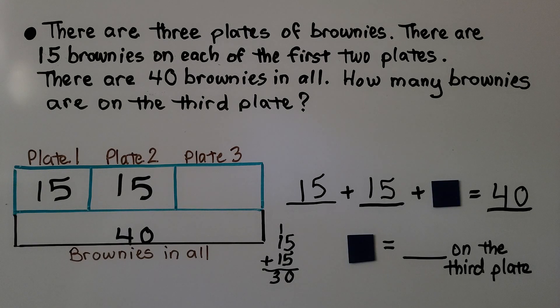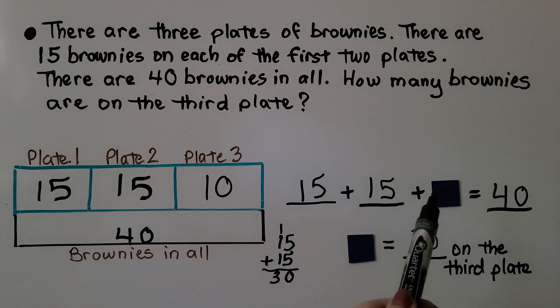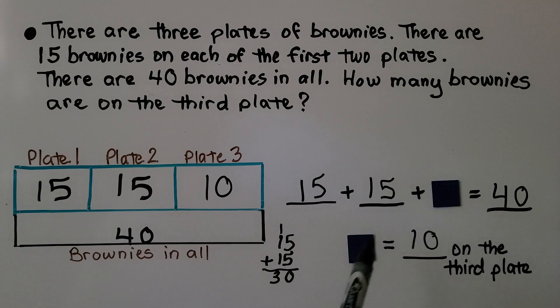30 plus some number is equal to 40. If you said 10, you're right. 30 plus 10 is equal to 40. There must be 10 on the third plate. And our little square in our number sentence, our equation, is equal to 10.